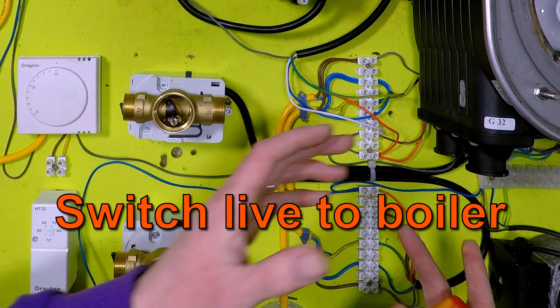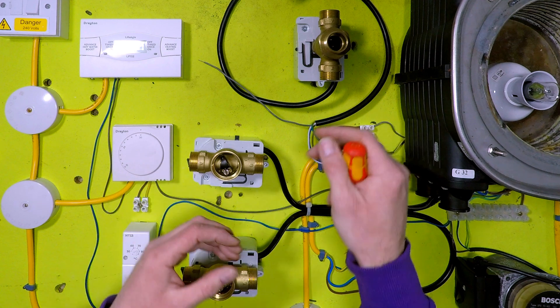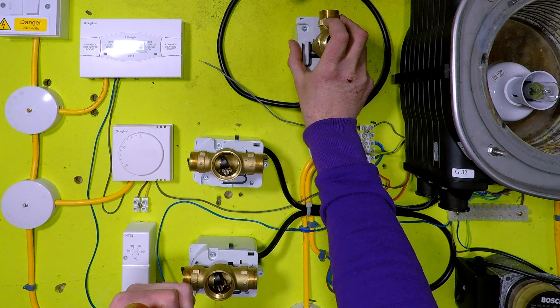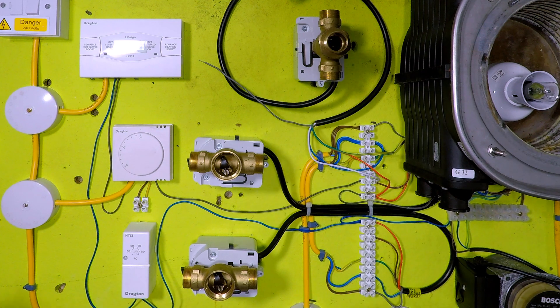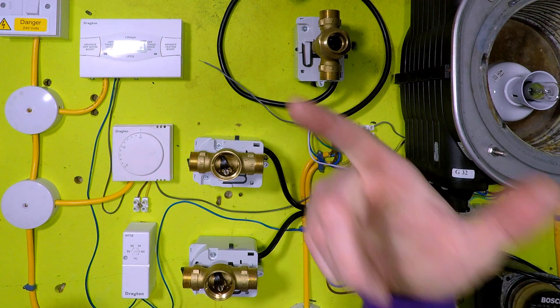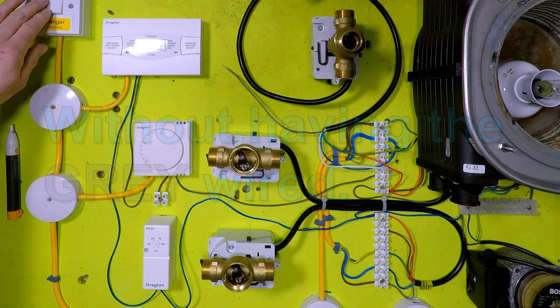And then the cylinder stat is saying I want to be heated and where does it send that power out? Down this wire here and it goes into the orange, so it runs the boiler again. All on a heating and water demand, all the three port does when everything's calling for heat is go to mid position. It doesn't do any demanding, doesn't send power anywhere. It just moves to mid position. That's it. So we're going to create a heating only demand.